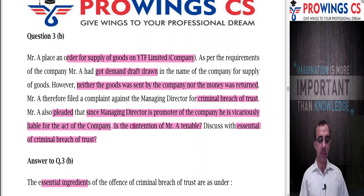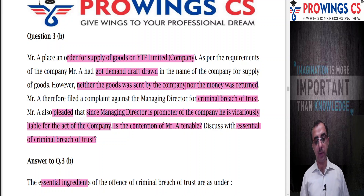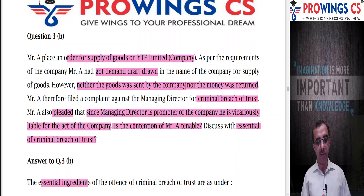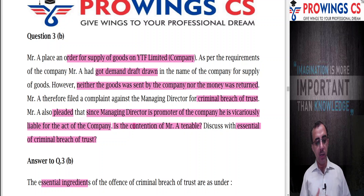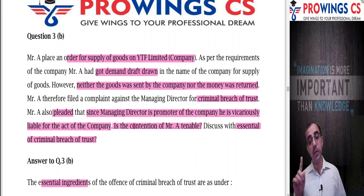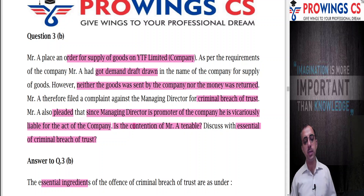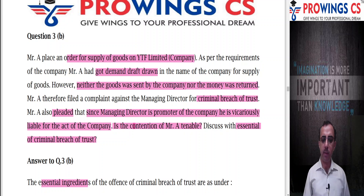Question 3B: Mr. A placed an order for supply of goods on XYZ Company Limited. As per requirements, Mr. A got a demand draft in the name of the company. However, neither were the goods sent by the company nor was the money returned. So Mr. A filed a complaint against the Managing Director for criminal breach of trust, also pleading that since the Managing Director is a promoter of the company, he is vicariously liable for the act of the company. Is the contention of Mr. A tenable? Discuss with the essentials of breach of trust.